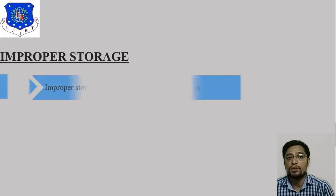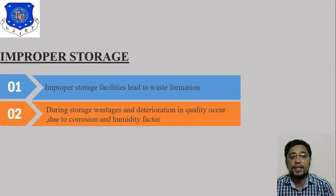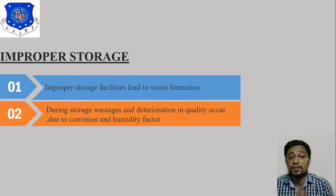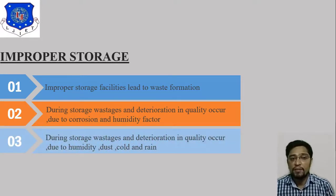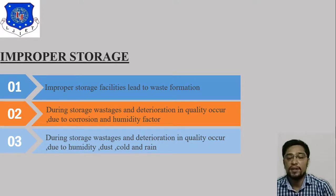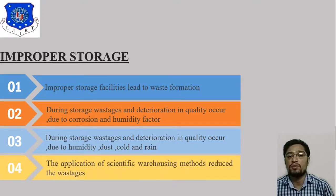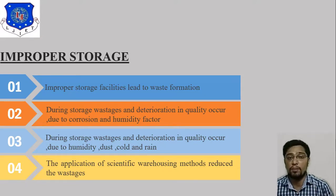The second factor is improper storage. Improper storage facilities lead to waste formation. During storage, wastage and deterioration in quality occur due to corrosion and humidity. Quality also deteriorates due to dust, cold, and rain. The application of scientific warehousing methods can reduce wastage.